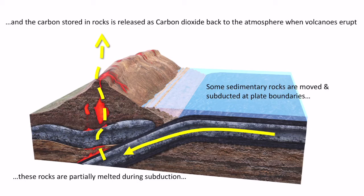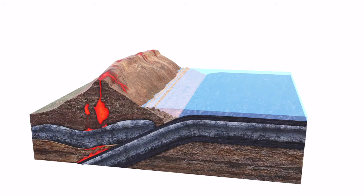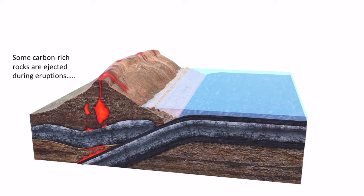That's not the only way that carbon gets back into the atmosphere involving sedimentary rocks. We also get some of the carbon rocks being ejected during the eruptions. They're converted into silicate minerals and get ejected out of the rock, out of the volcano.